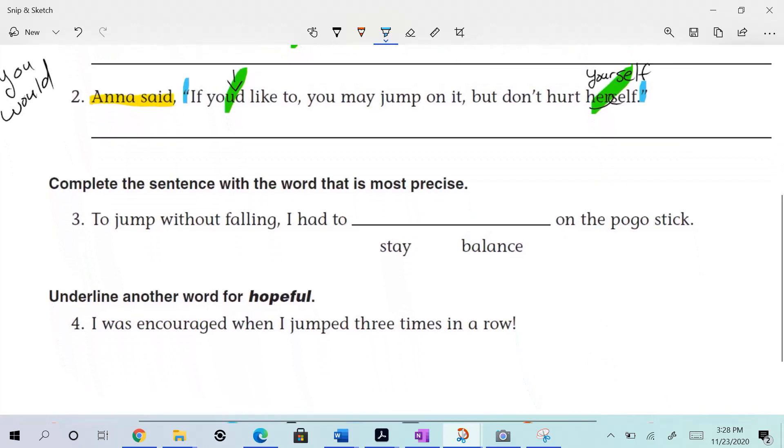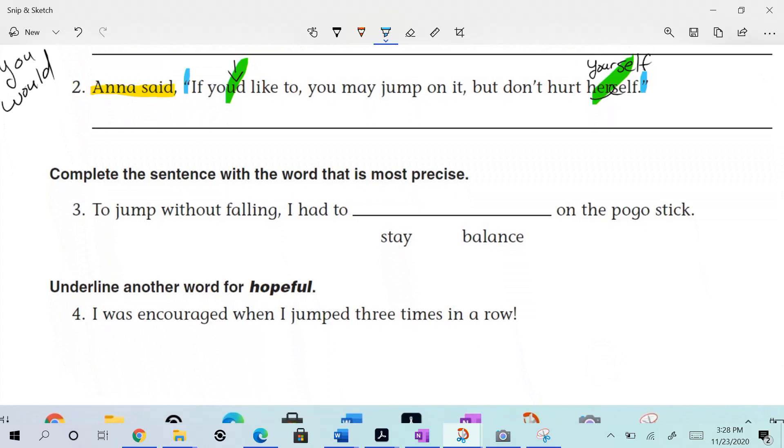Alright, take a look. Complete the sentence with the word that is most precise. We're going to be starting to talk about precise language, which means people who talk a lot sometimes need to dial it back when I'm writing. I need to write specifics and precision and leave out words we don't need. So let's look: complete the sentence with the word that is most precise. To jump without falling, I had to stay on the pogo stick, or I had to balance on the pogo stick. Which is it? You could just stay on a pogo stick, and I'm going to tell you it probably isn't going to work out for you. You need to balance. You need to balance on that pogo stick, don't you? Yes, balance. To jump without falling, I had to balance on the pogo stick. That's precisely what you need to do is balance.